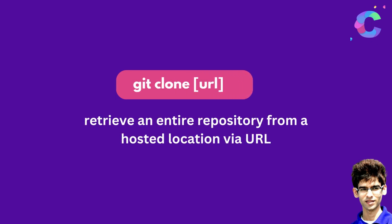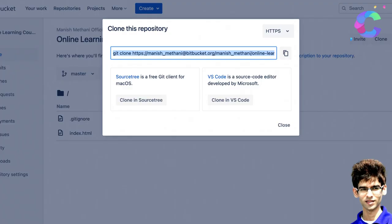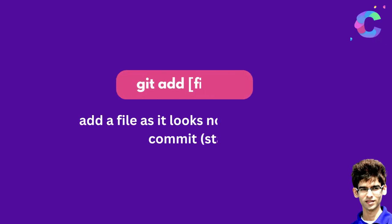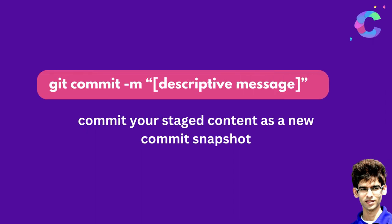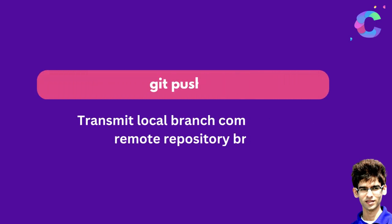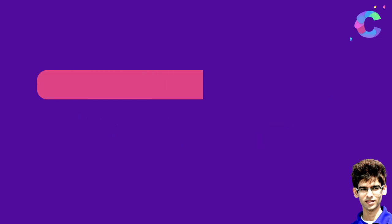Here's a quick review of the Git commands used practically. To clone a repository: use 'git clone <url>'. To add files: use 'git add <filename>', which adds the file to the staging index. Then commit with 'git commit -m "your message"' — the -m flag stands for message, where you describe what the file or change is about.